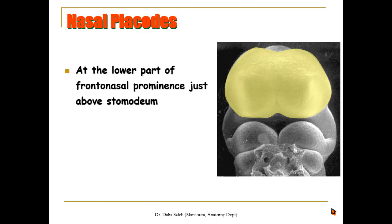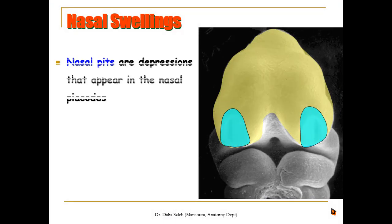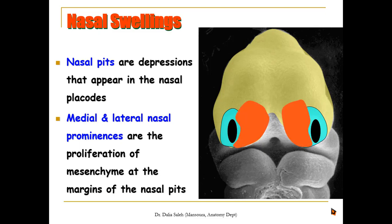At the lower part of the frontonasal prominence, just above the stomodium, two thickenings of the ectoderm appear by the end of the fourth week of development. These thickenings are called the nasal placodes. Two depressions then appear at the nasal placodes — they are called the nasal pits. On each side of the nasal pit there are two swellings: one on the medial side called the medial nasal swelling, and one on the lateral side called the lateral nasal swelling. These are proliferations of the mesenchyme at the margins of the nasal pits.